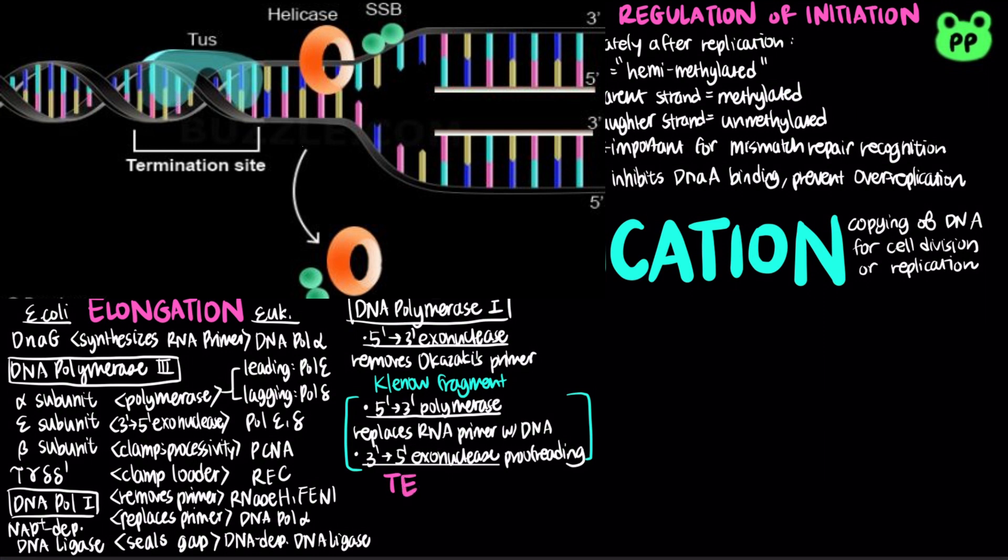Eventually, the two replication forks of the circular bacterial chromosome meet at a terminus region containing the TER sequences, which functions as binding sites for the protein TUS, which stands for terminus utilization substance. The TUS-TER complex arrests a replication fork from only one direction and prevents over-replication.